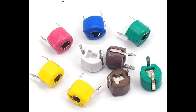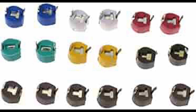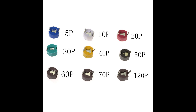The capacitance of trimmer capacitors is adjusted manually, typically using a small screw or dial mechanism, allowing precise changes during circuit calibration or fine-tuning. They can be readjusted multiple times without significant wear, allowing for recalibration when needed. Trimmer capacitors are designed for long-term use, capable of enduring repeated adjustments without significant degradation, and many are built to withstand mechanical stress, making them suitable for environments with vibration or movement.